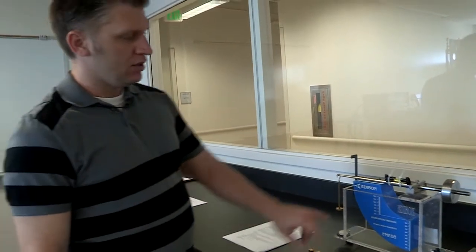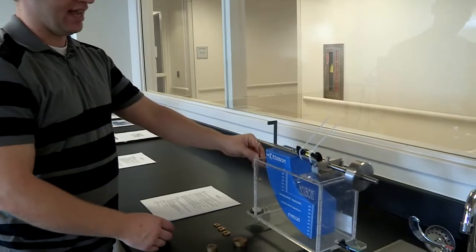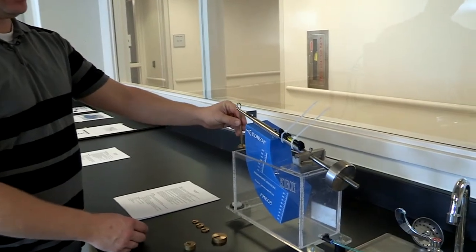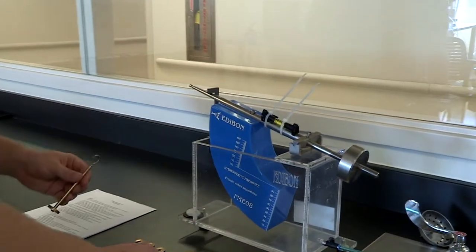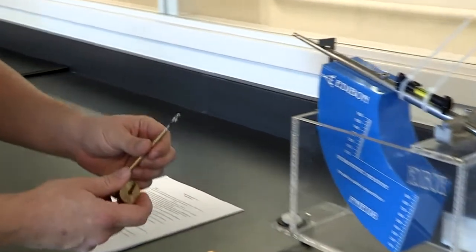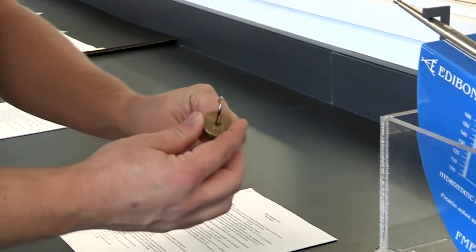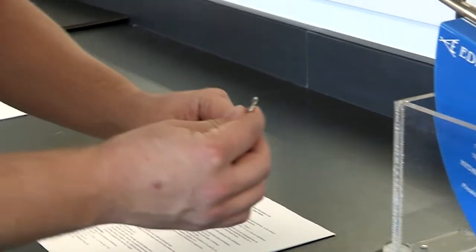Okay, so after we've got it level, take the hanger off. We're going to allow the edibon to come up, we're going to add 75 grams worth of weight. You'll take it, slide it over, let it slide down.